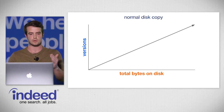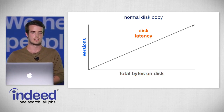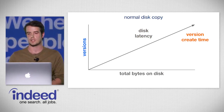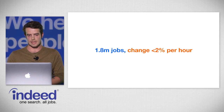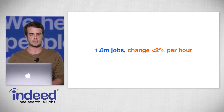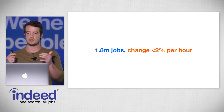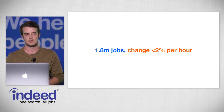Unfortunately, every new version was taking up disk space and time to create. A graph of 'normal disk copy' shows total bytes on disk increasing linearly with each version — as we increased the number of versions, we increased the bytes needed on our hard drives, which also increased disk latency and the time to create each new version. Even with almost 1.8 million jobs, we were only changing less than 2% of them per hour.